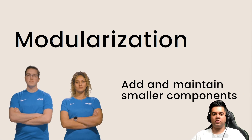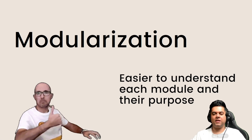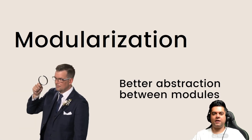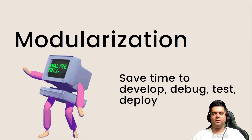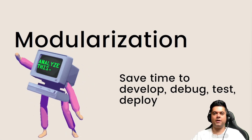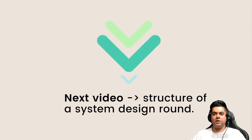In conclusion, modularization makes it easy to add and maintain smaller components. It makes it easier to understand each module and their purpose. It makes it easier to reuse and refactor modules, and leads to better abstraction between modules. And it saves the time required to develop, debug, test, and deploy a system.